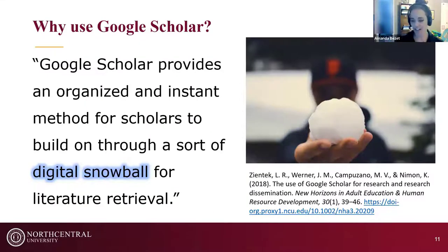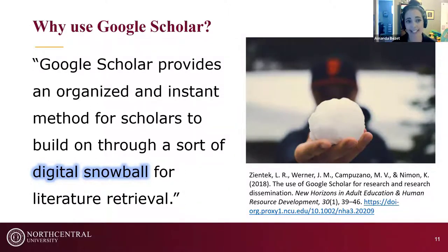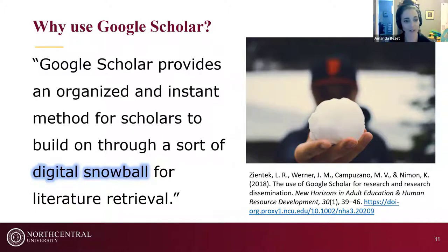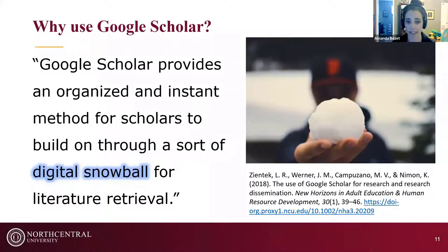Google Scholar provides an organized and instant method for scholars to build a digital snowball for literature retrieval. With just a few clicks, you can get to citing articles and related articles, then the citing and related articles for those — continuing to build upon your literature. This may be easier to do through Google Scholar than through a tool like the library's Roadrunner search.